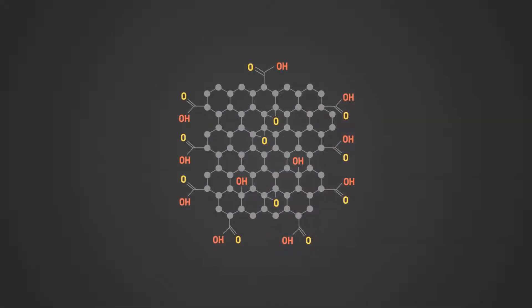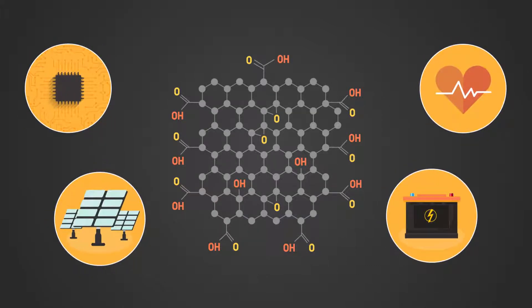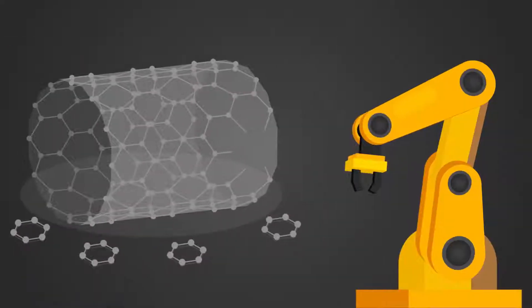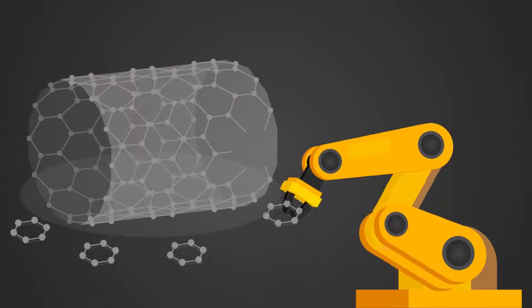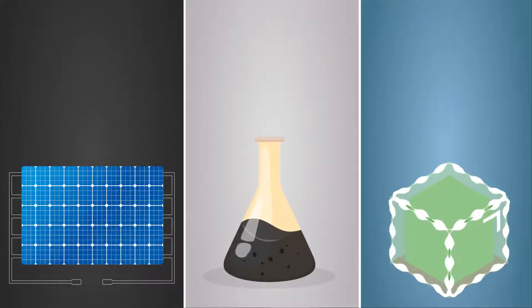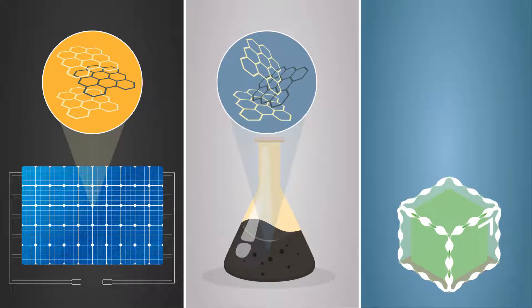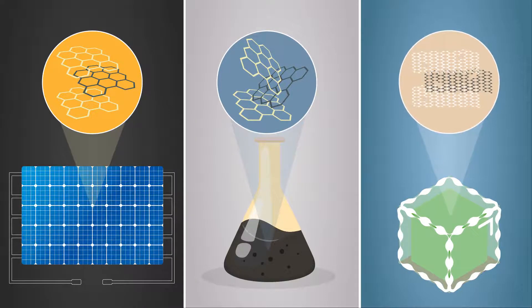Graphene oxide is extremely versatile, with potential applications in many engineering fields. But for its effective use, control of its structure is essential. For instance, thin films and membranes require highly ordered nanoparticle arrangements, composites require dispersed nanoparticles, and hydrogels require 3D porous arrangements.